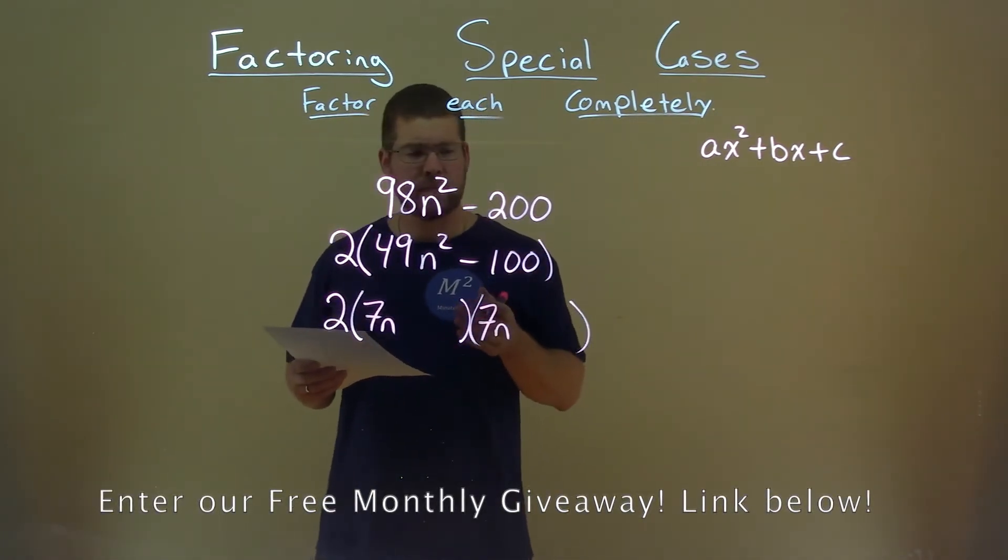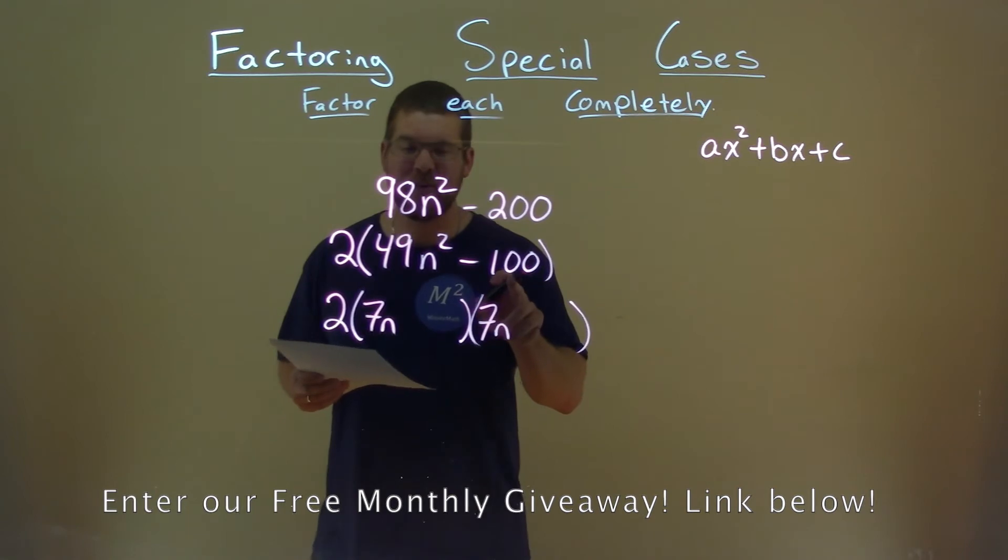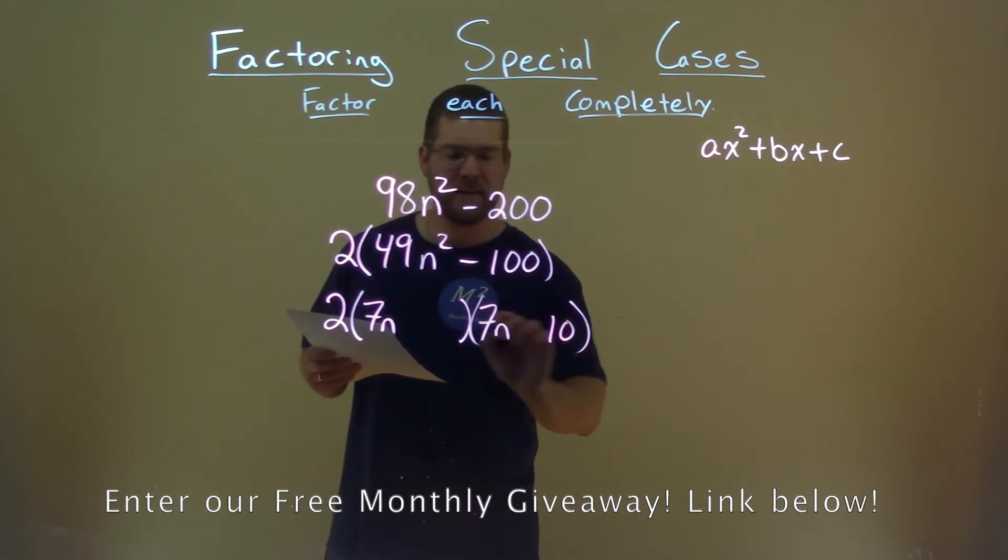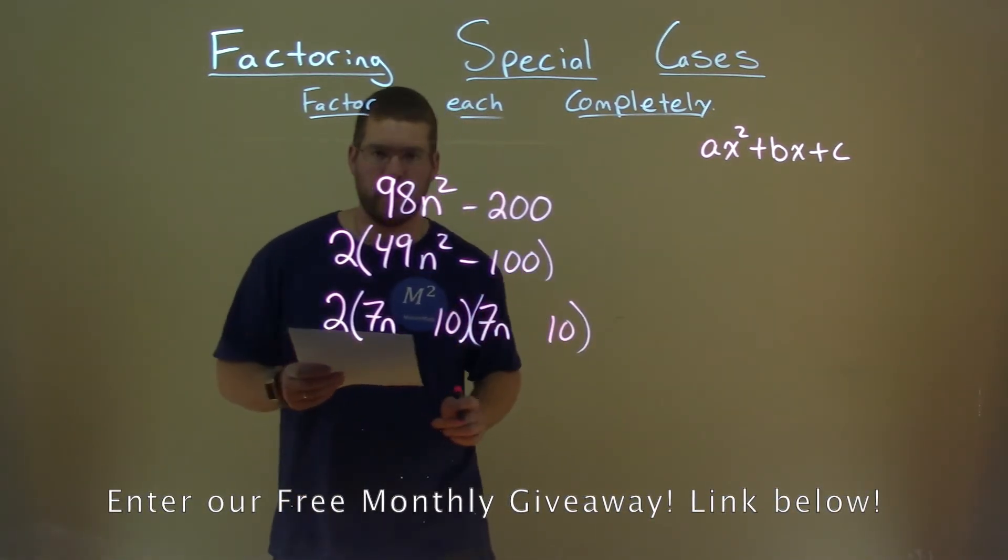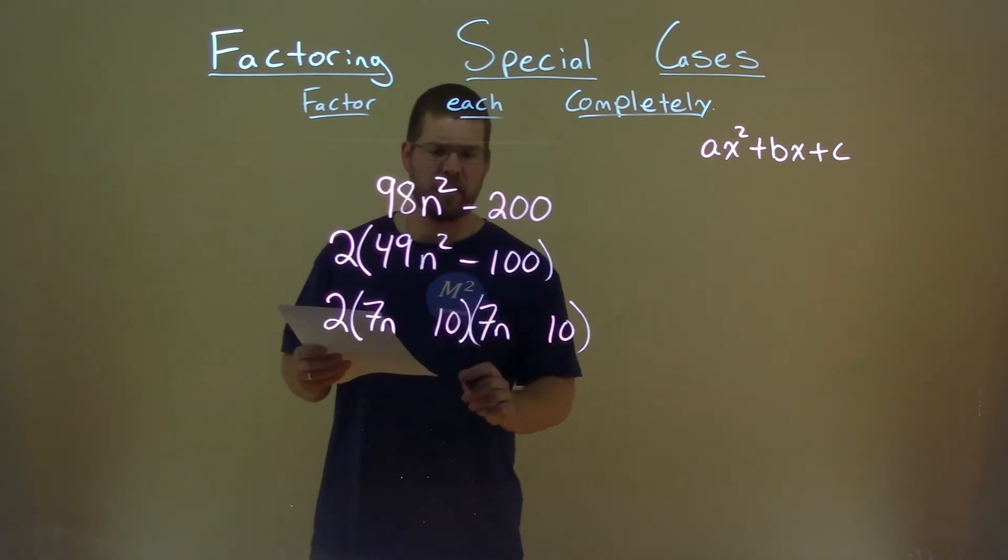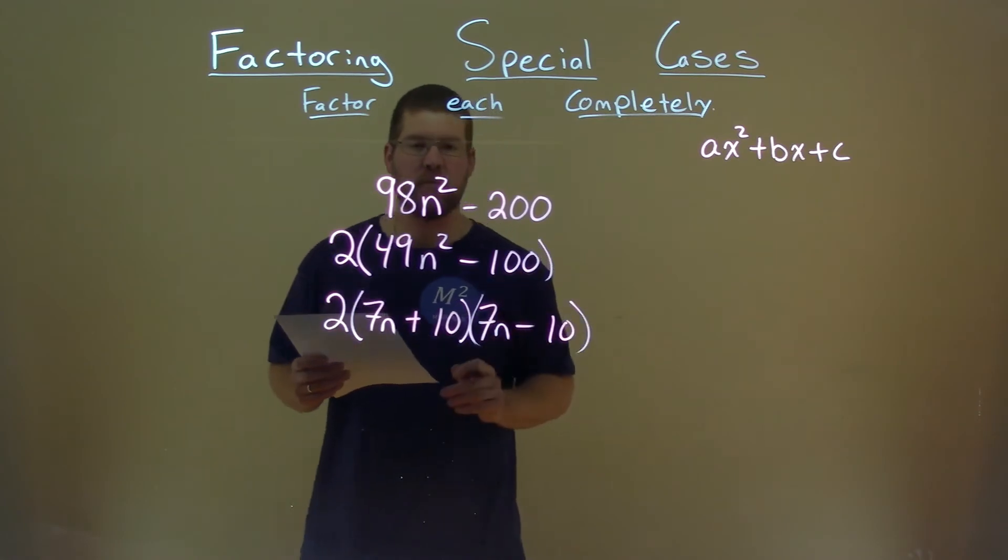But what about the 100? Got ahead of myself. The square root of 100 is 10. So 10 times 10 gives me 100, but we need a negative 100. So if this is positive and that's negative, positive times negative 10 is negative 100.